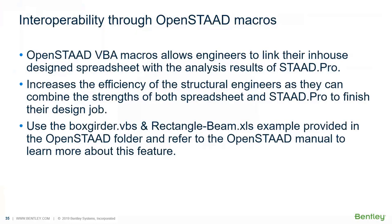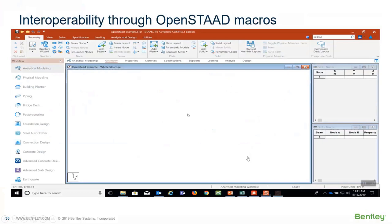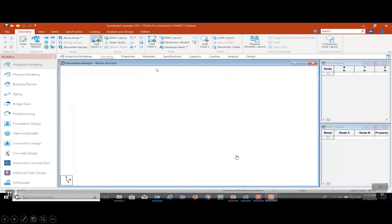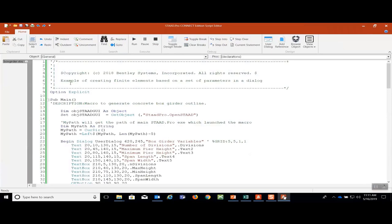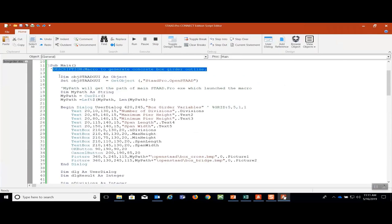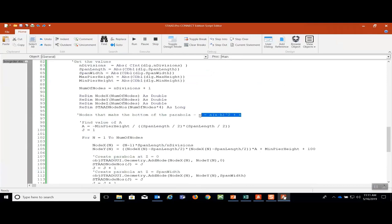We are going to demonstrate the built-in VBA macros already created in the OpenSTAAD folder of the STAAD.Pro installation folder, so everybody can look at them. There are box gutter VBA macros and rectangular beam mixer examples as spreadsheet examples provided in the OpenSTAAD folder. Let's see how it works. In STAAD.Pro, we go to Utilities, then Macros, and there is the Box Gutter macro. This can be edited — it creates a macro to complete a box gutter grid line.